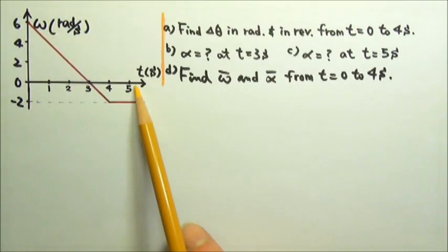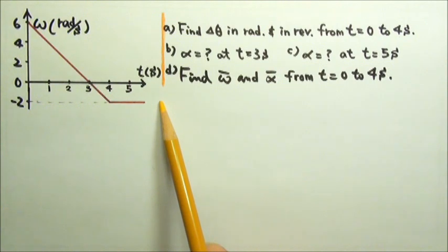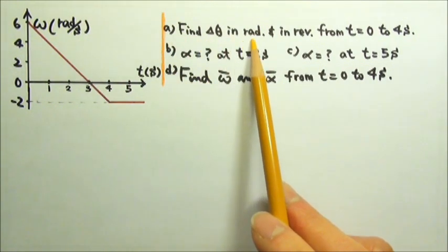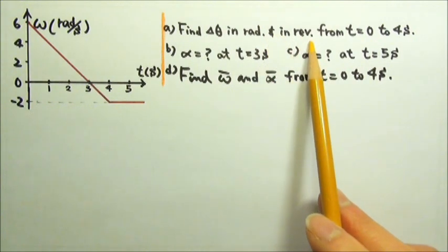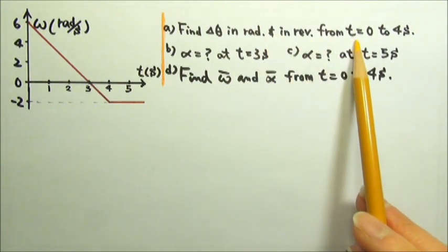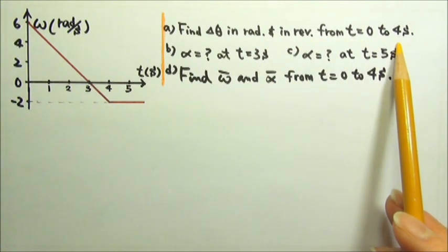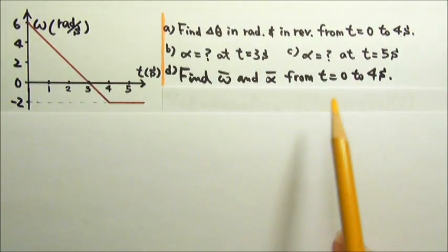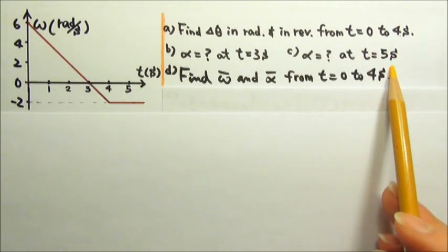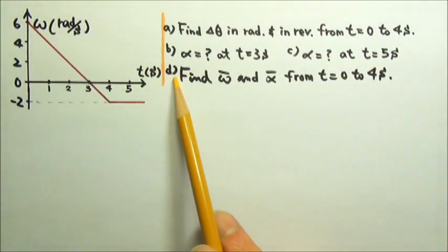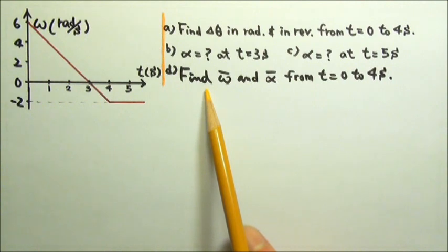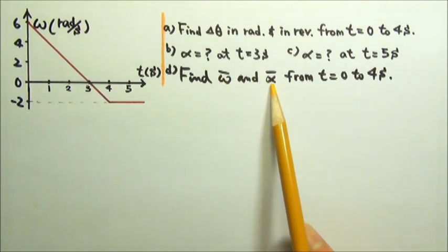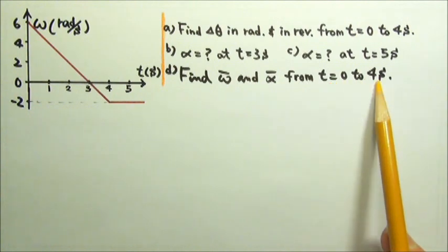Here's an angular velocity as a function of time graph for a merry-go-round. Part A: find the angular displacement in radians and in revolutions from t equals zero to four seconds. Also find the angular acceleration at t equals three seconds and at t equals five seconds. Part D: find the average angular velocity and the average angular acceleration from t equals zero to four seconds.